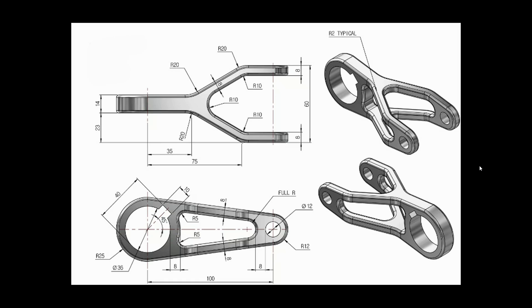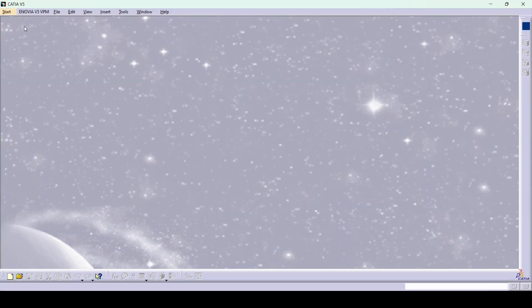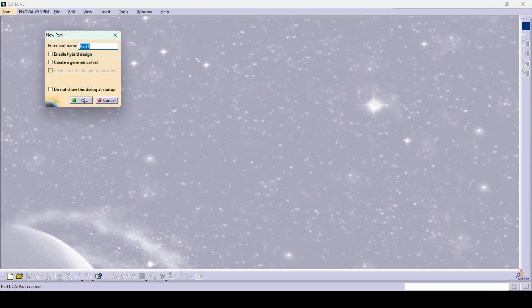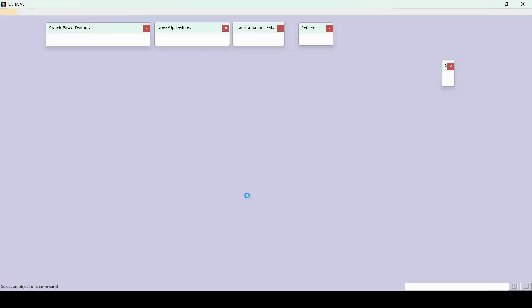Hello everyone. In this tutorial we are going to see how to create this model in CATIA part design. For that I will enter into part design by using Start and say OK.